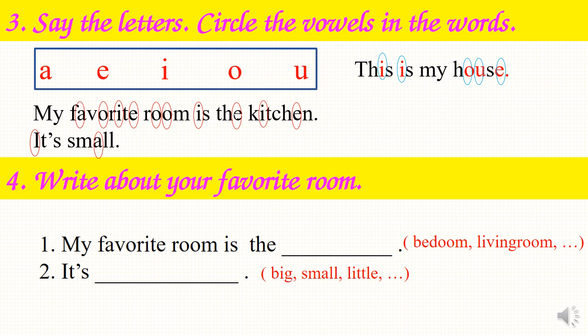Let's correct Part 3. Next is Part 4: Write about your favorite room. There are 2 sentences. You have to write about your favorite room using words like bedroom, living room, or kitchen for the first sentence, and big, small, or little to describe the size for the second. For example: Number 1 — My favorite room is the living room. Number 2 — It's little. You did the task very well.